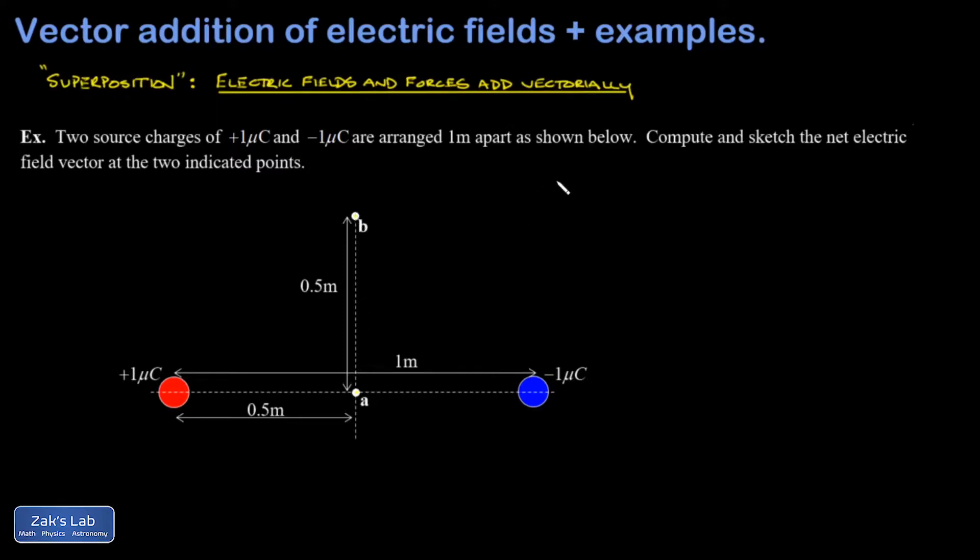So let's get A done first. So there are two contributions to the total electric field at point A. And one of them is the field pointing away from the positive charge. So I'm going to call that E_A plus. And then the other one is the field pointing toward the negative charge, and I'll call that E_A minus.